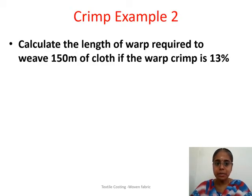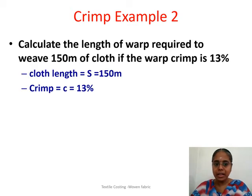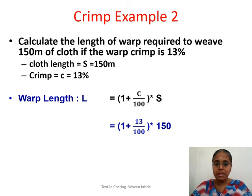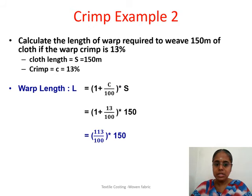Next example using crimp: calculate the length of warp required to weave 150 meters of cloth if the warp crimp is 13%. The cloth length is given and you have to find the warp length. The formula is: warp length L = (1 + C/100) × S. Substituting: L = (1 + 13/100) × 150 = (113/100) × 150 = 169.5 meters. So the warp length required to weave 150 meters of cloth is 169.5 meters.